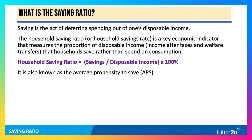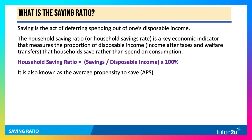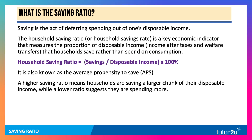The savings ratio is also known as the average propensity to save. People's marginal propensity to save — how much they choose to save out of any change in income — will affect the average propensity to save.